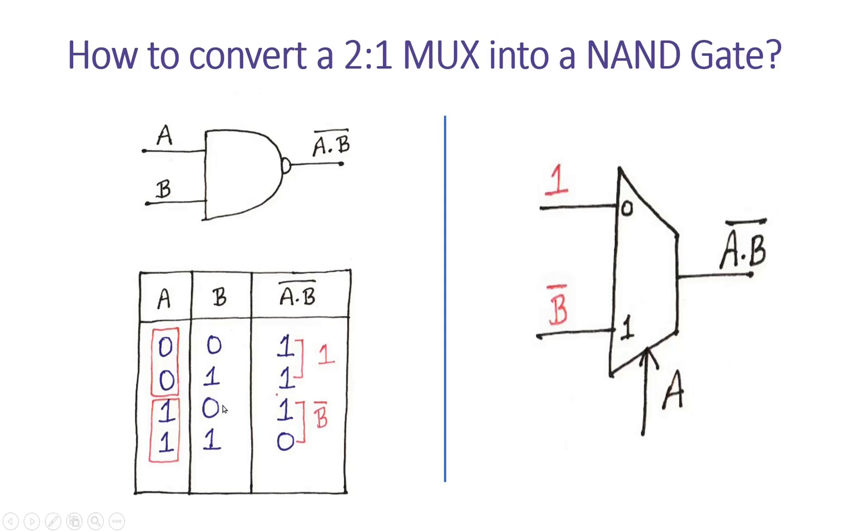So when B is zero, output is one. When B is one, output is zero. So that means it is B bar, not of B. So we will tie B bar at the I1 input.